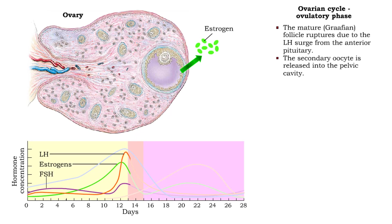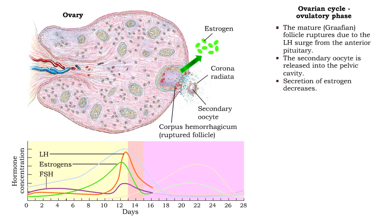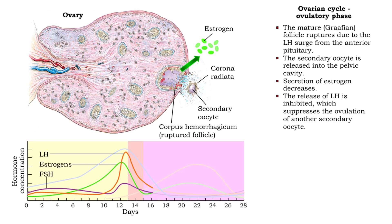The luteinizing hormone surge signals the mature follicle to rupture and release the secondary oocyte into the pelvic cavity. Secretion of estrogen decreases, thereby inhibiting the release of luteinizing hormone, stopping the ovulation of another secondary oocyte.